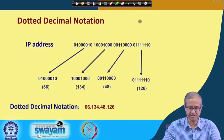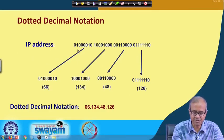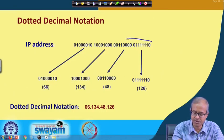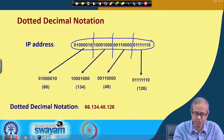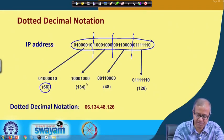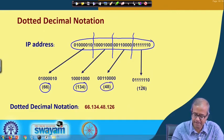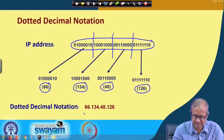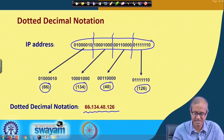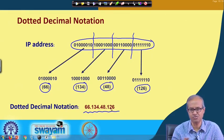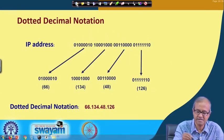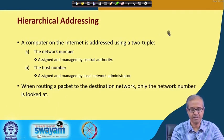Let us take an example of dotted decimal notation. Suppose we have a 32-bit IP address divided into 4 eight-bit chunks called octets, and each chunk is expressed in equivalent decimal. This 32-bit number is expressed in a concise form like 66.134.48.126. This is the dotted decimal notation, which is much easier to write, express, and also remember.